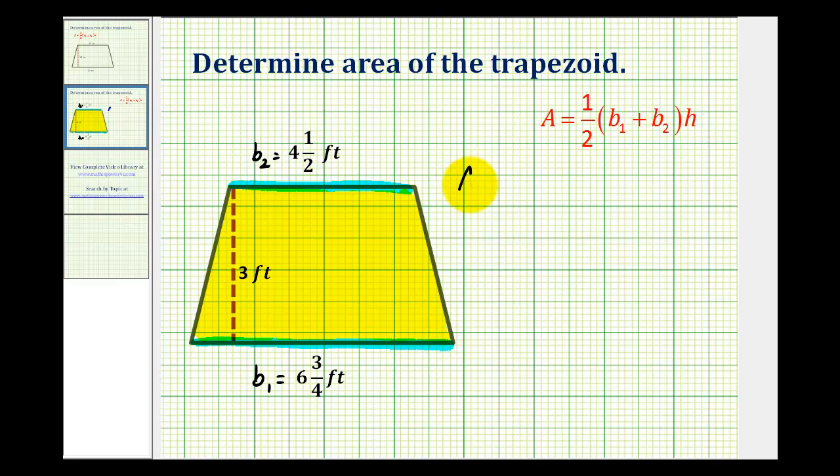So the area is going to be equal to one-half times six and three-fourths feet, plus four and a half feet, times three feet. Now the first thing we need to do is determine this sum here.